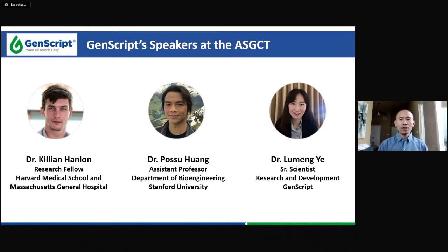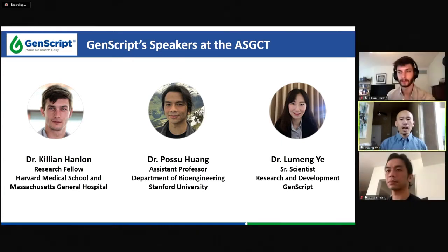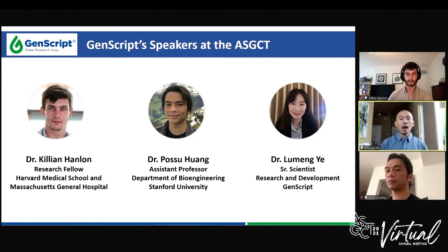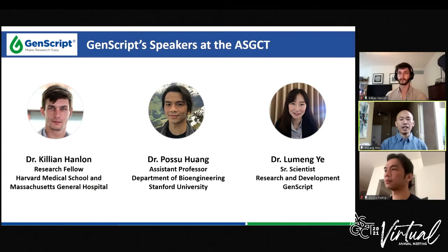Today, I'm honored to introduce the three speakers in our session. The first speaker is Dr. Killian Hanlong, who is a research fellow at Harvard Medical School and Massachusetts General Hospital. He is an expert in mutant libraries and utilization of these mutant libraries for gene and cell therapy applications. Today, he'll be talking about how library-selected AAV variants can effectively translate to non-human primates in the spinal cord and cochlea.